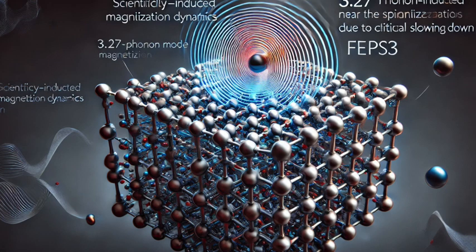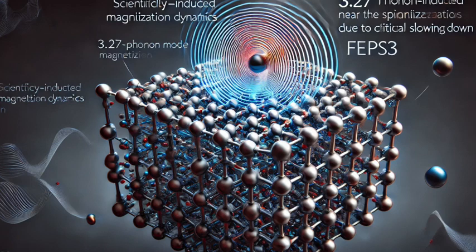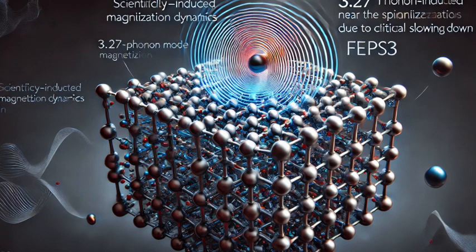So it's like having a knob that lets you fine-tune the magnetic behavior of the material. Okay, so we've got this long-lasting magnetization induced by light, but how do scientists actually measure it? I mean, we can't see magnetism with our eyes. You're right, magnetism is invisible to us, but scientists have developed some pretty clever techniques to detect and measure it.